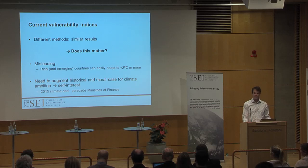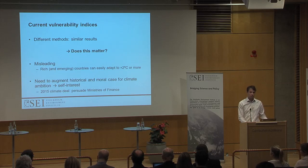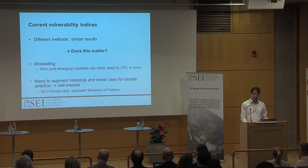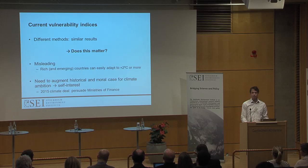How to allocate finance has even been a policy question these indices have supposedly been used for. A range of different methods exist across the many indices out there. Some are deductive, using theoretical explanations to select indicators. Some use statistical analysis to justify indicator selection. Some involve expert or stakeholder input. But they all seem to produce fairly similar results, and I'm asking if that matters. I think it does — the main reason is that they produce or reinforce a misleading perception that rich and emerging economies aren't vulnerable and that their vulnerability is independent of developing countries.